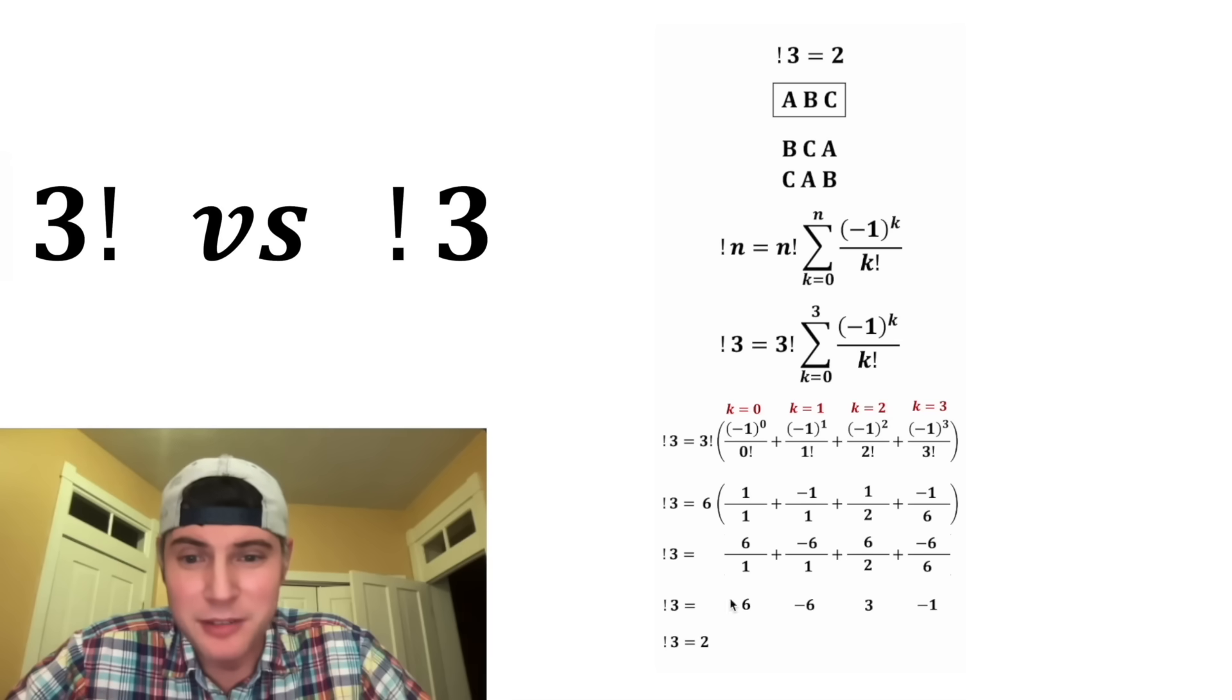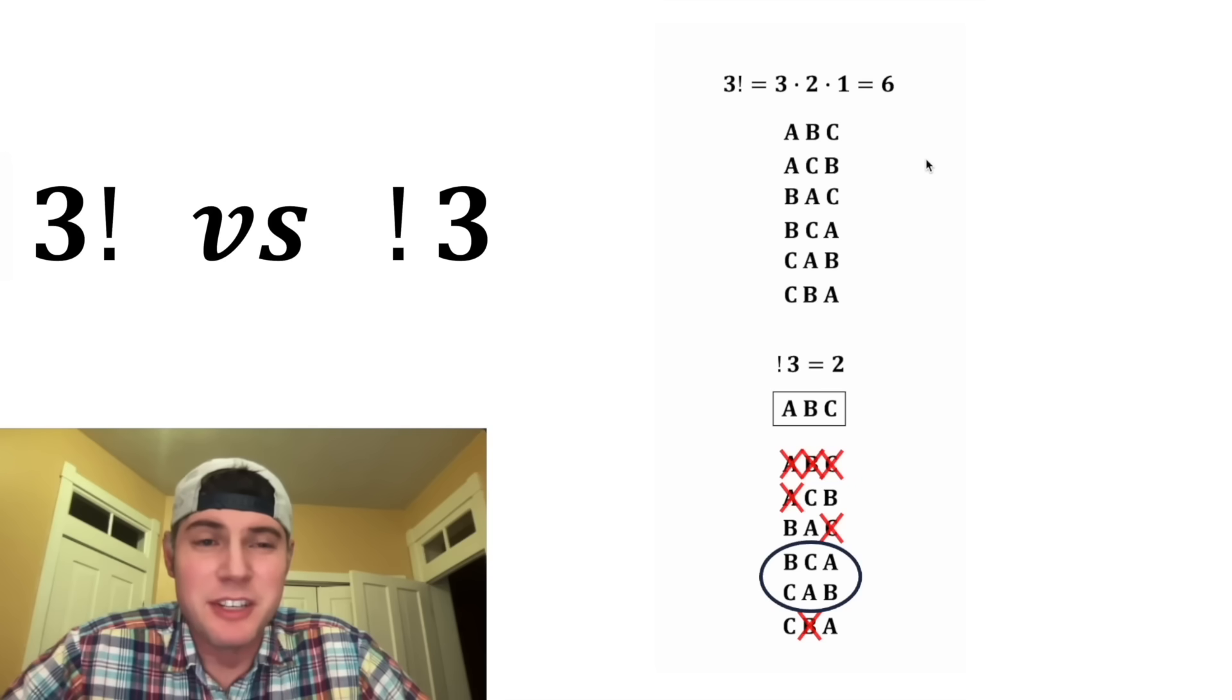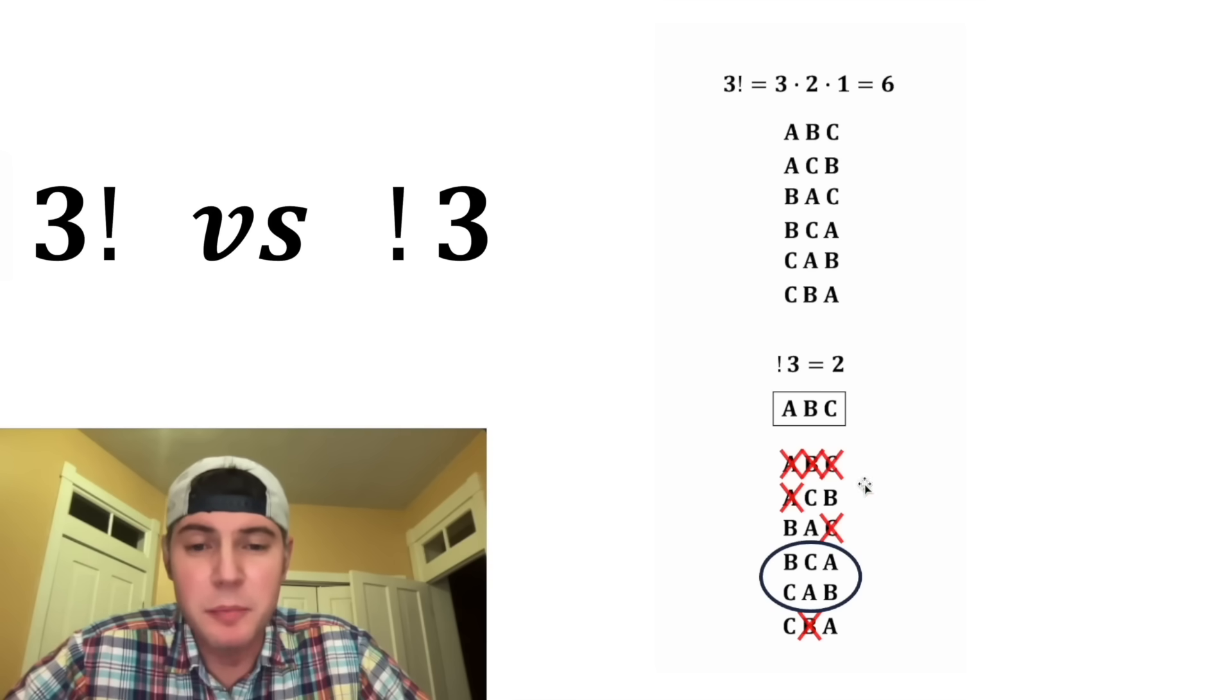And this was the formula way to find out that subfactorial 3 is equal to 2. So once again, the difference between factorial and subfactorial, they're both looking at different ways to arrange stuff. But subfactorial excludes any permutations where an object is in its original position. How exciting.